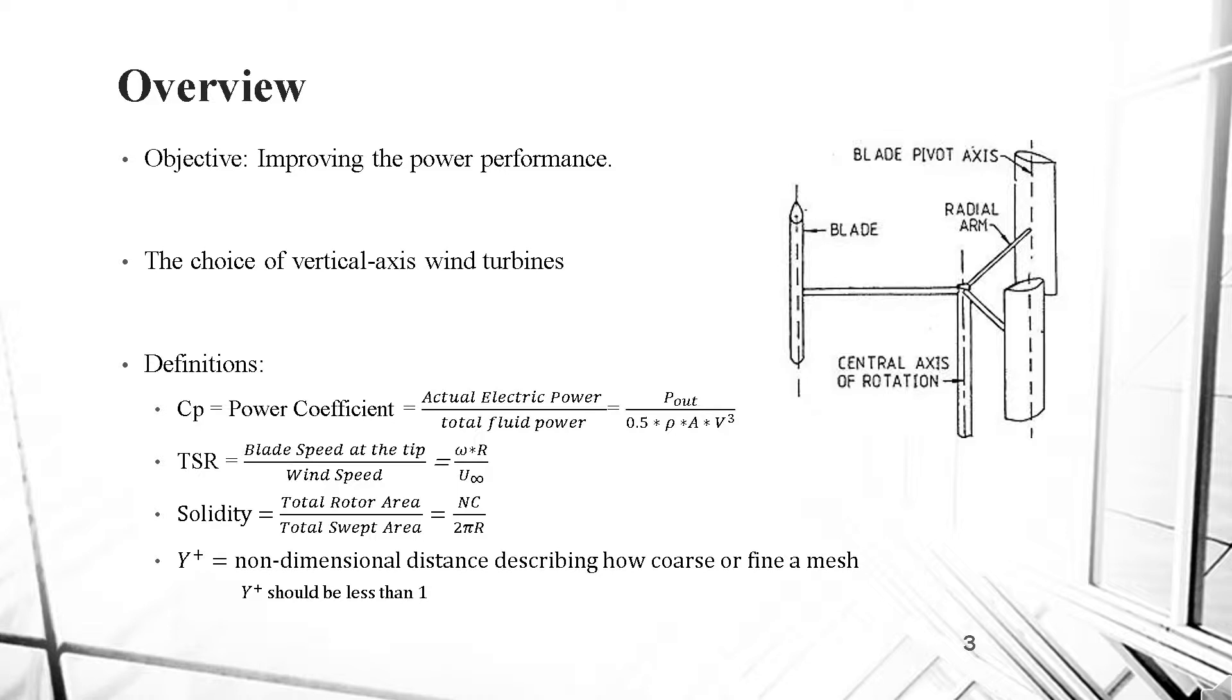Before going any further in our simulation analysis, some parameters need to be clearly defined since they constitute the basis of the technical aspect of our optimization. CP is the power coefficient, which is the ratio of the electric power generated by the turbine over the power supposed to be generated by the fluid. TSR is the ratio of the blade rotor speed over the wind speed. The solidity is a crucial criteria in determining the length of the blade; it happens to be the total rotor area over the swept area. And Y plus, which is one of the most important measures while meshing, since it determines whether the mesh is fine enough and should be actually less than 1.